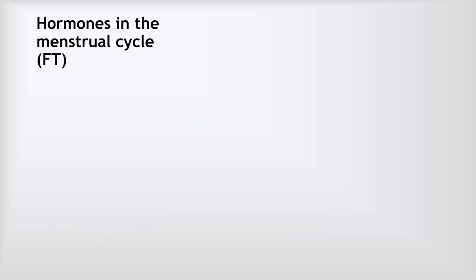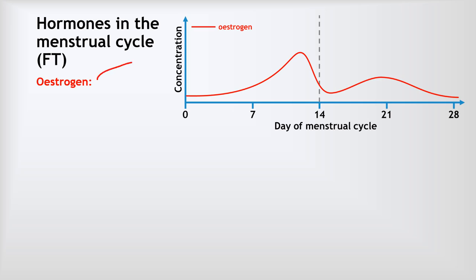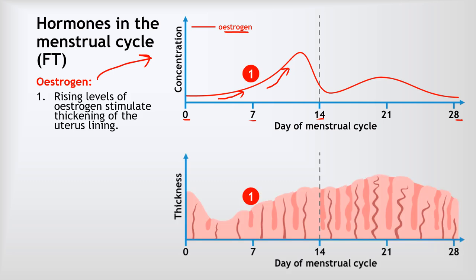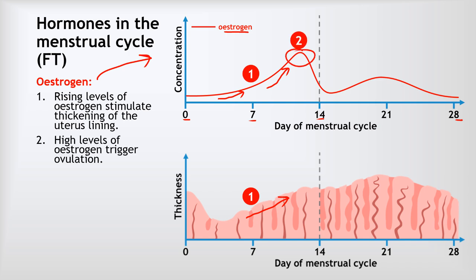Now we need to understand the role of hormones in controlling the menstrual cycle. At foundation tier, there are two main hormones: oestrogen and progesterone. Looking at a graph of oestrogen over the days of the menstrual cycle, the red line starts off low and begins to rise. This increasing concentration of oestrogen causes a thickening of the lining of the uterus. The oestrogen level then spikes, and that spike is what triggers ovulation — when an egg is released from one of the ovaries.